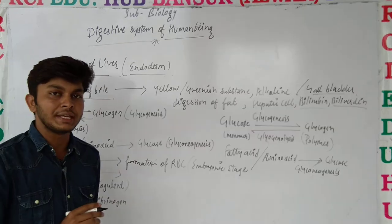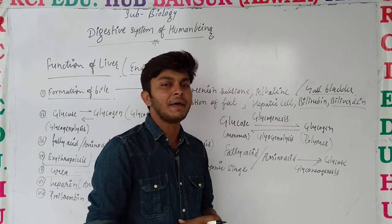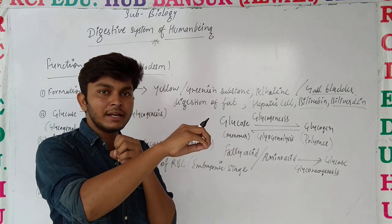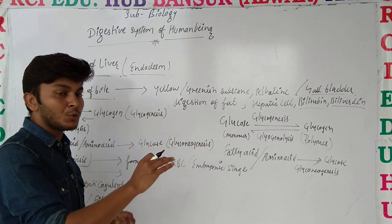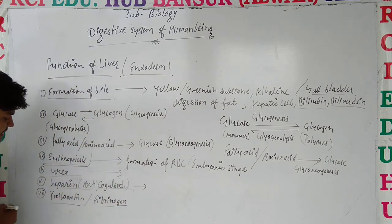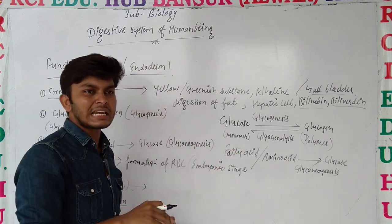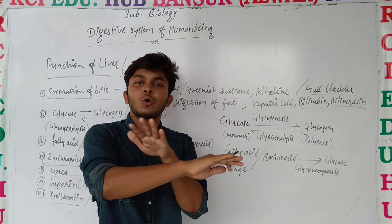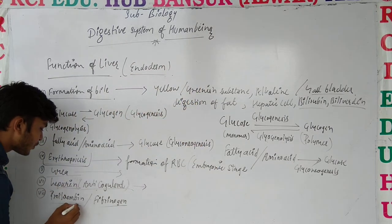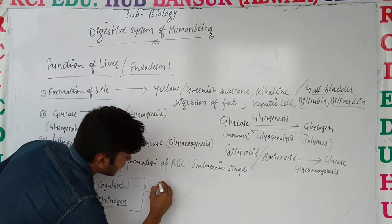Liver is also synthesizing proteins. The name of that protein is heparin, और heparin का main function होता है कि blood को clot नहीं होने देना — रखका थक्का नहीं जमने देना। This protein prevents blood clotting inside the vessels. इसके अलावा, liver और भी proteins synthesize करता है — like prothrombin and fibrinogen, जो कि clotting के अंदर helpful होती हैं जब कहीं चोट लग जाती है। Heparin, prothrombin, and fibrinogen — इनके बारे में blood circulatory system के अंदर विस्तार से बात करेंगे।